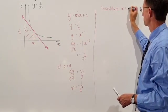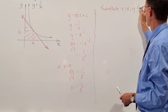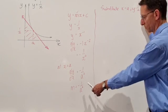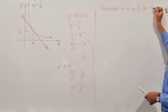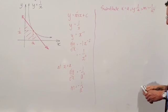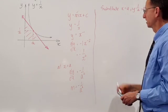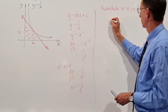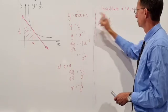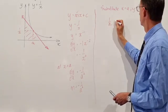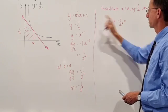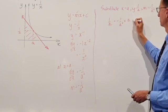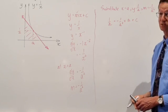y equals 1 on a and the gradient which we've got from our gradient function from the reciprocal that's negative 1 on a squared. We put all that information together and we get as follows. 1 on a, so we're substituting to this function here, is equal to the gradient which is negative 1 on a squared multiplied by the x value a plus our y intercept which we're trying to determine.